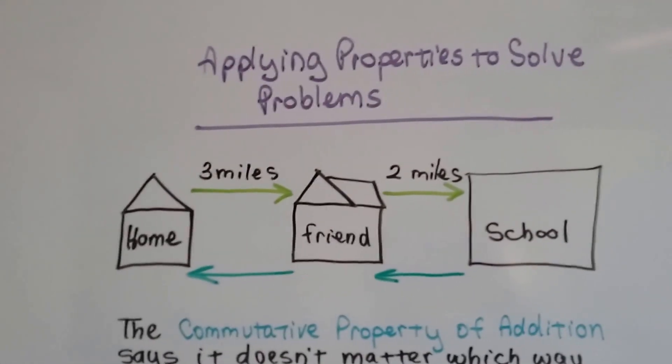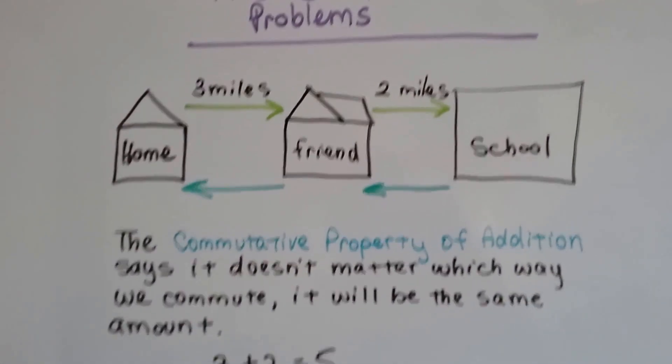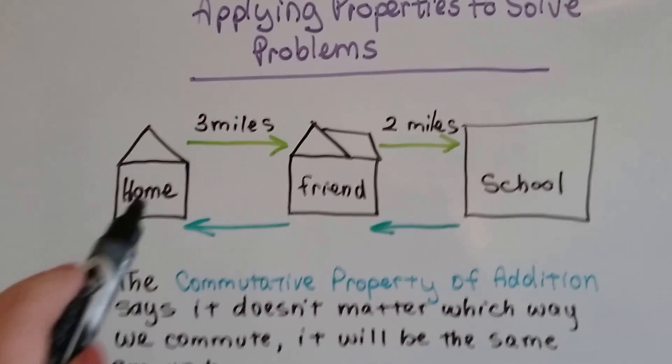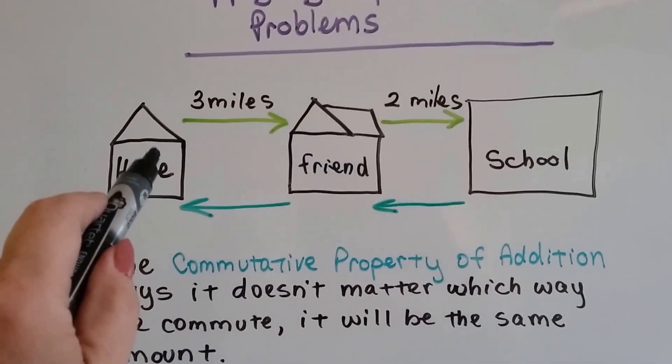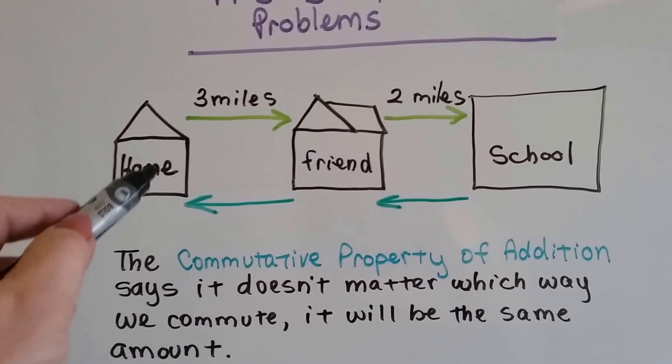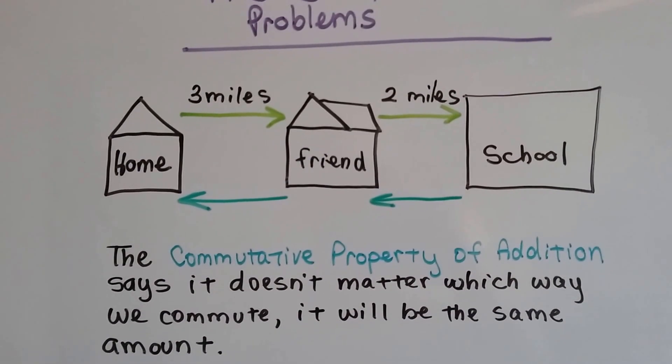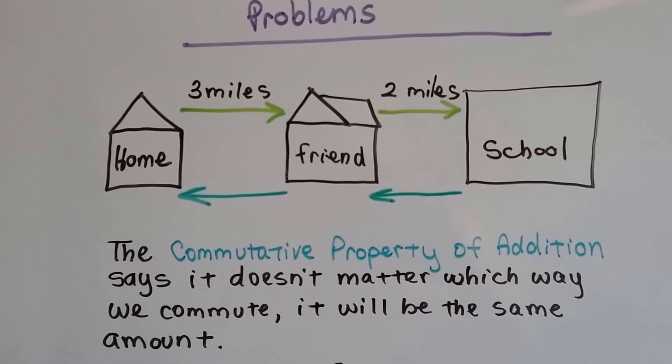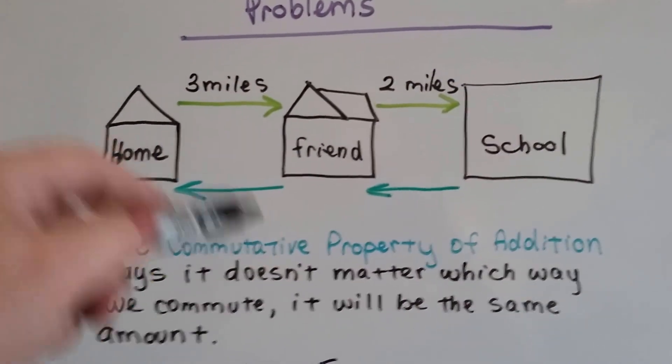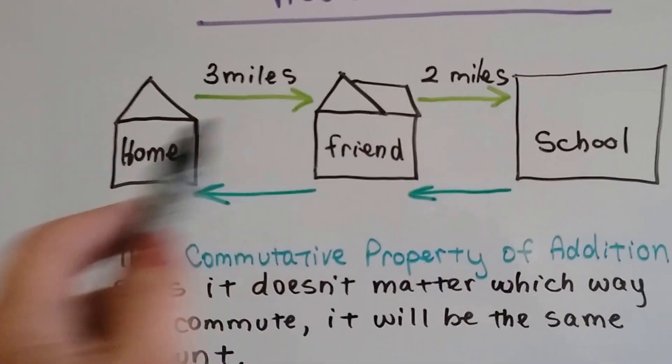Here's applying properties to solve problems. So do you remember the commutative property? So, you're at home and you commute. That means get in the car and drive or ride your bike or whatever. People commute to work and home. And they say, oh, the commute was terrible. The traffic was bad. That's the commute. It's the travel.